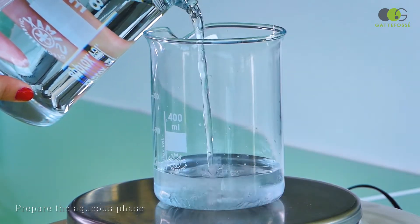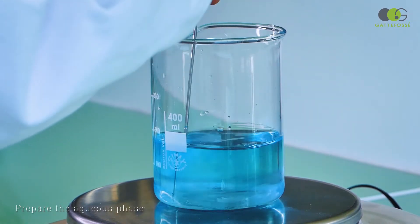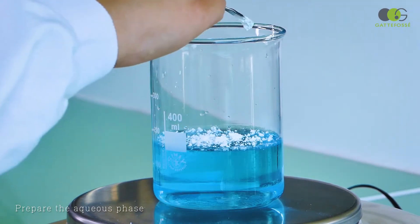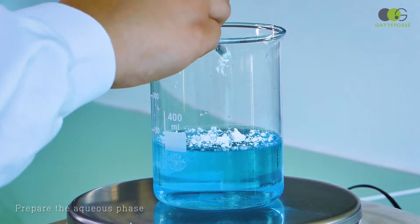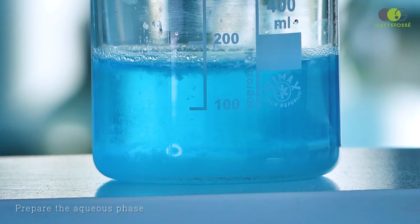In this example, water is added to glycerin. For the purpose of the demonstration, a blue colorant has been added to the aqueous phase. Then the gelling agent is added. A pre-neutralization step is done to increase the viscosity of the gel.